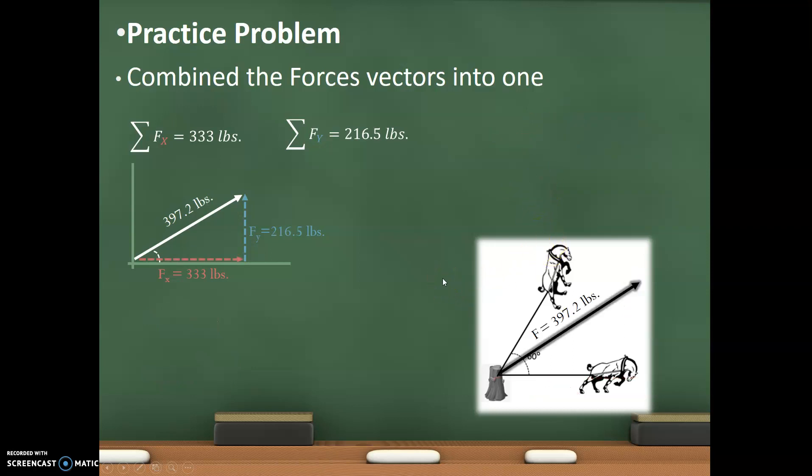So that means that I am pulling with a force of 397.2 pounds at an angle of 33 degrees. So the combined force of these two horses individually couldn't pull that much. But combined together, they're going to create a force of 397.2 pounds. And they're going to pull that stump 33 degrees relative to the vertical. And it will pop it out in that direction. So the stump won't, like, kick back and hit one of the horses.